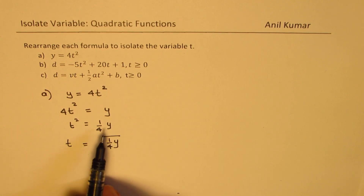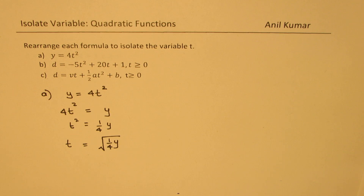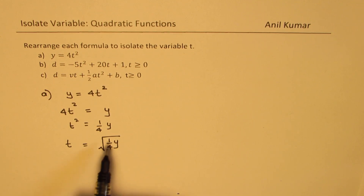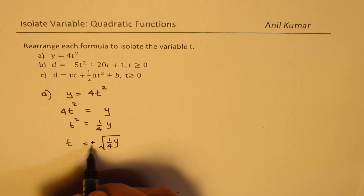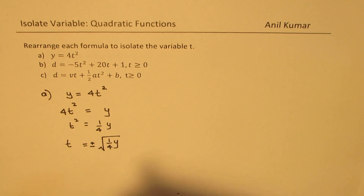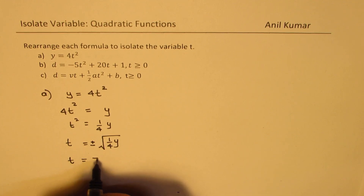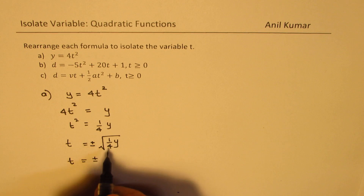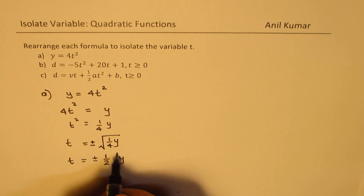At times I have seen students forget putting y under the square root — that would be one mistake. The other mistake is that when you do square root, you have to write plus and minus. We have not given any restrictions for t here, so it could be positive or negative value. We get t as plus or minus — square root of 4 is 2 — so plus or minus half square root of y. So that becomes the solution for the first part.